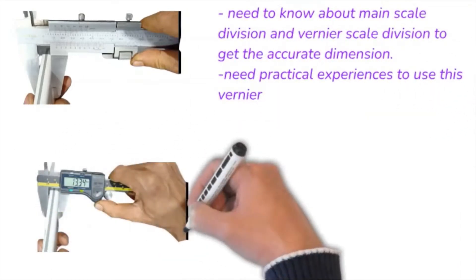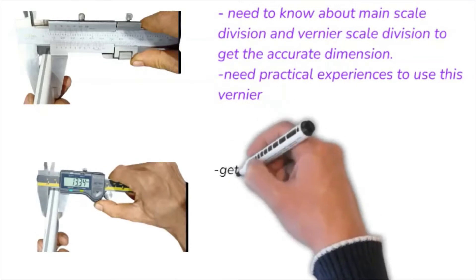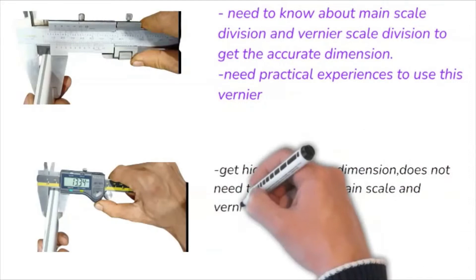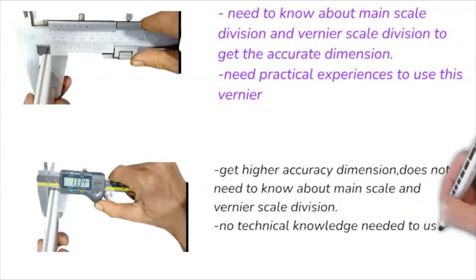In the second picture, we have seen that to get the dimension of the workpiece by using digital vernier caliper, get high accuracy dimension, does not need to know about main scale divisions and vernier scale divisions. No technical knowledge needed to use this vernier caliper.